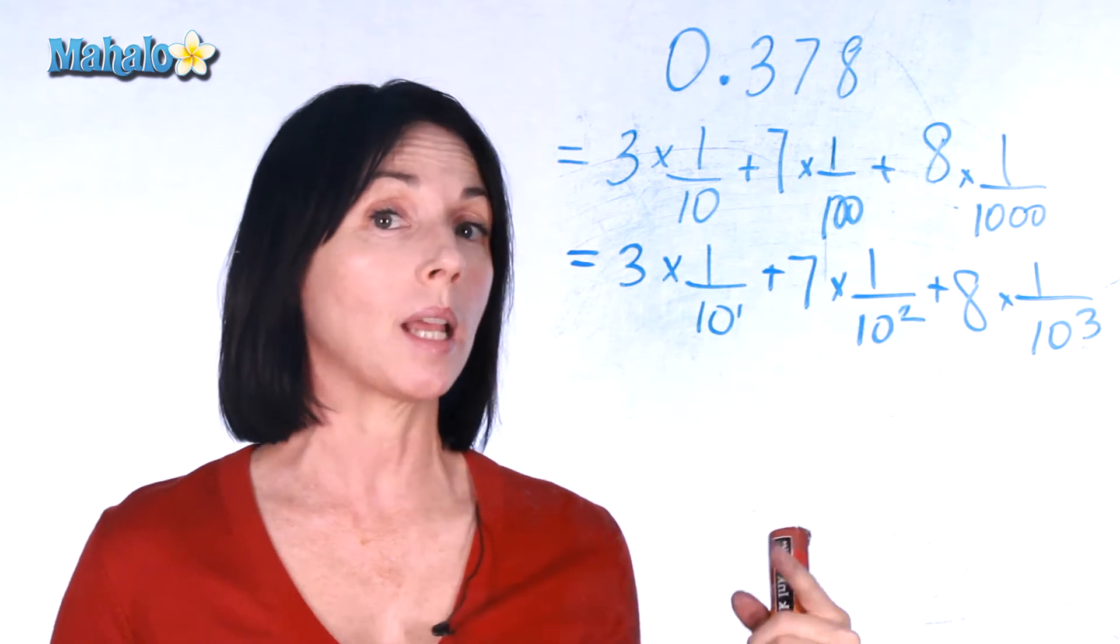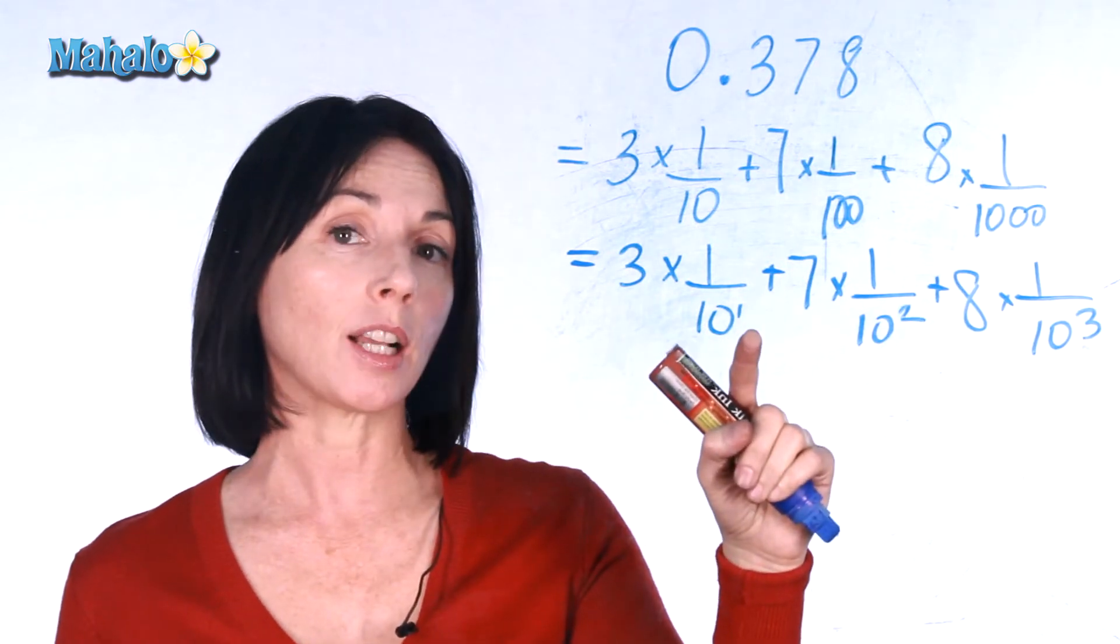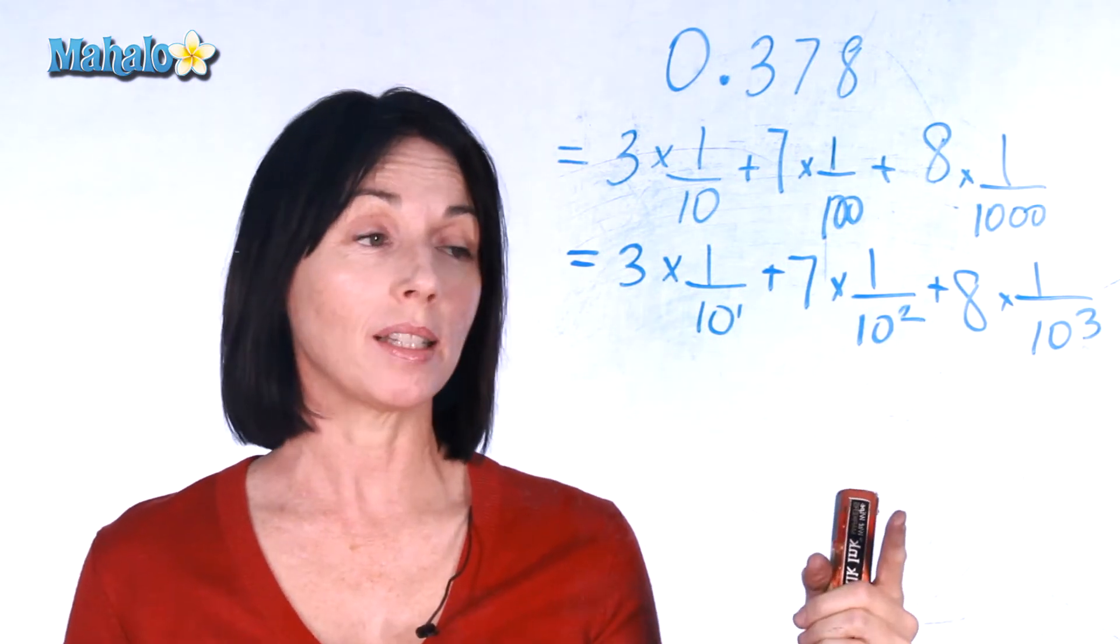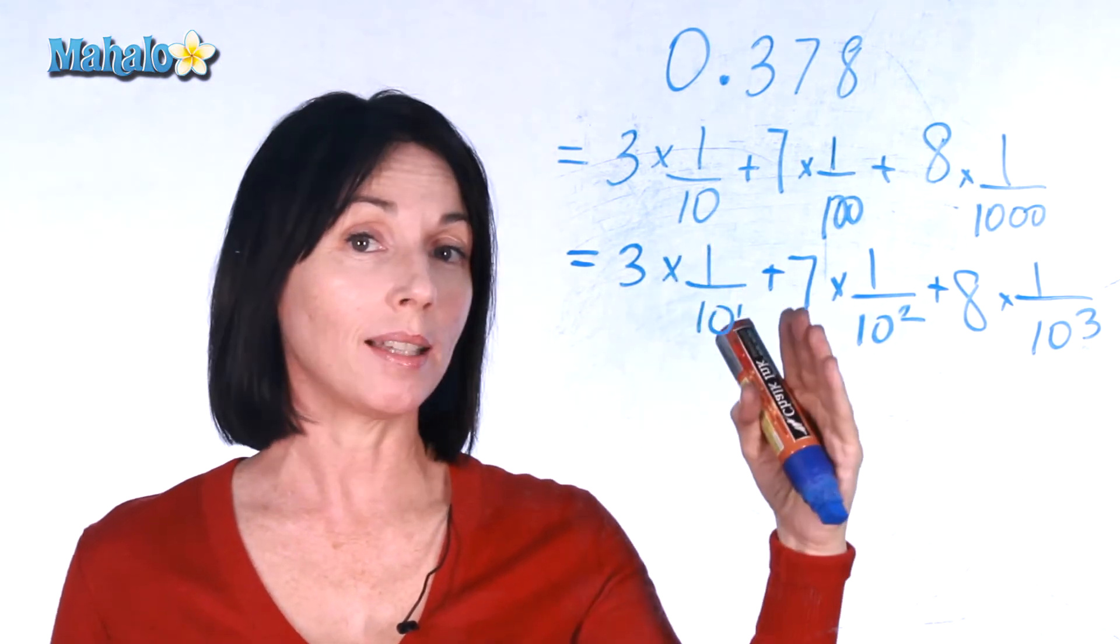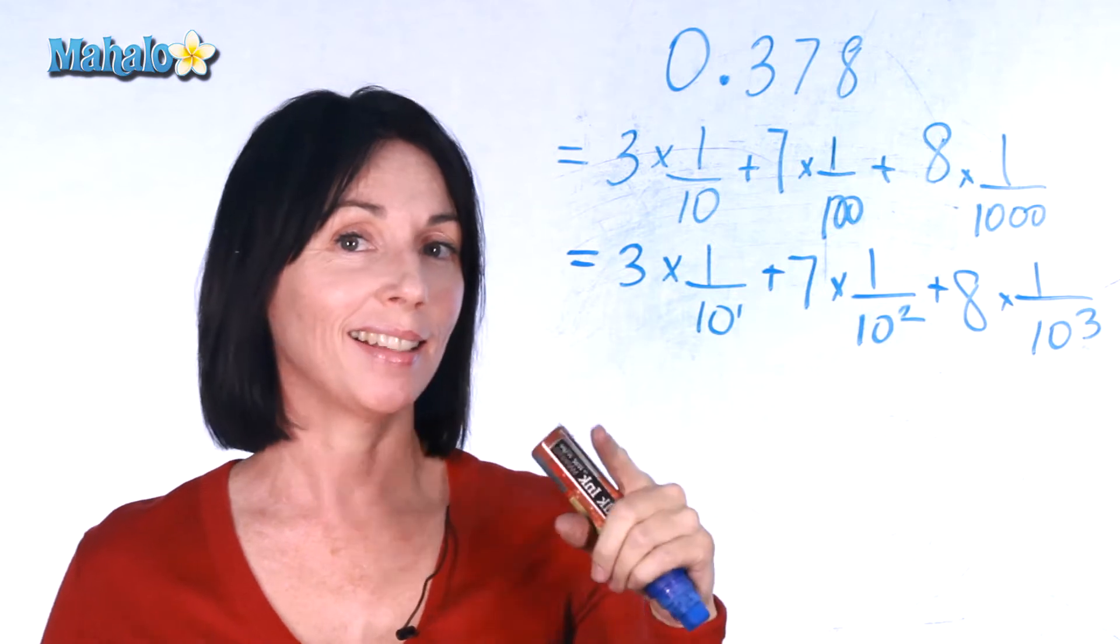But we can actually go one step further and change these exponents to negative exponents. And then instead of dividing by 10, we'll be multiplying by 10 raised to a negative power. And this is how it looks.